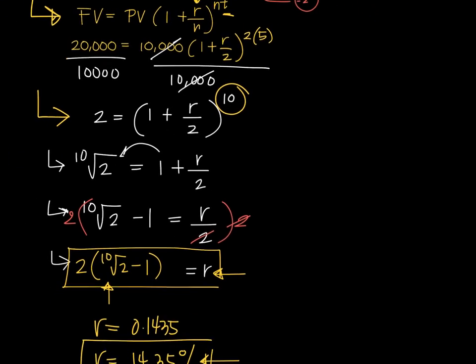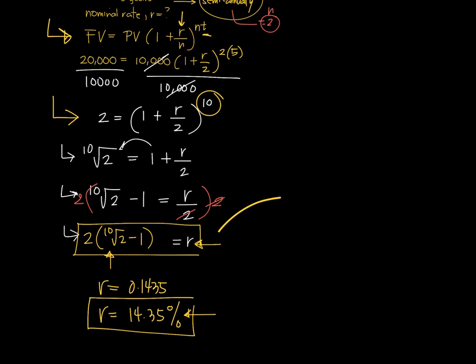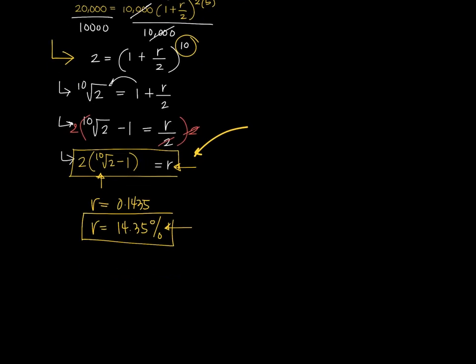At this point it's necessary to use a calculator because you cannot do tenth root of 2 manually. In the end, if you get a decimal, express that in percent up to two decimal places.